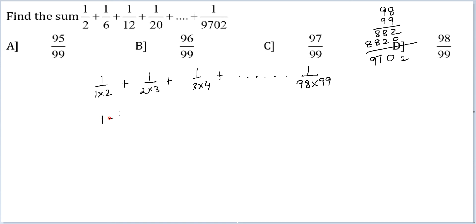So I can break this down as 1 minus 1 by 2, the first term. The second one I can break down as 1 by 2 minus 1 by 3. Then 1 by 3 minus 1 by 4, so on and so forth, up until 1 by 98 minus 1 by 99.